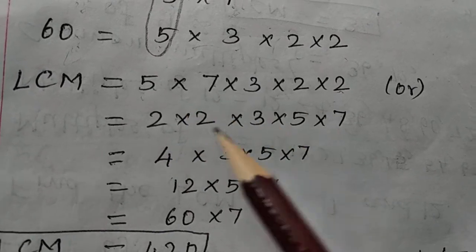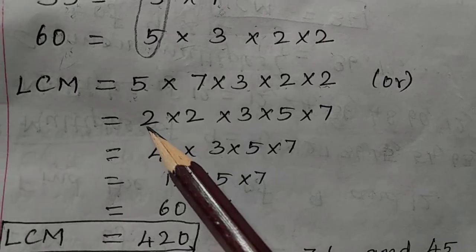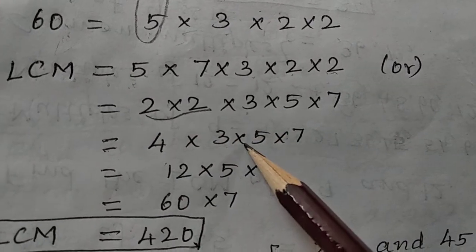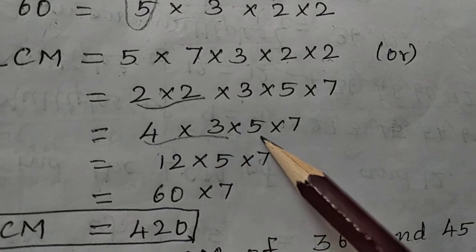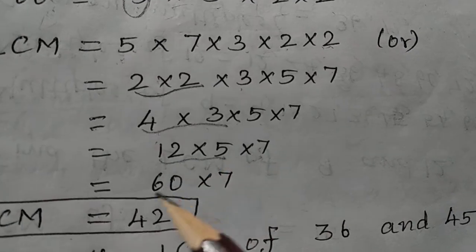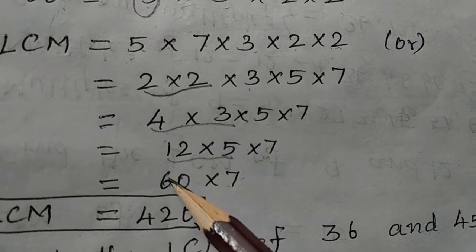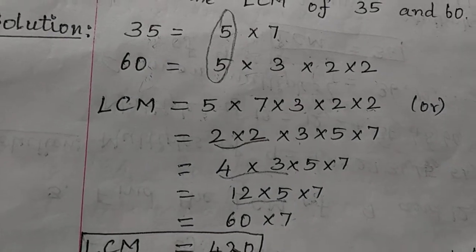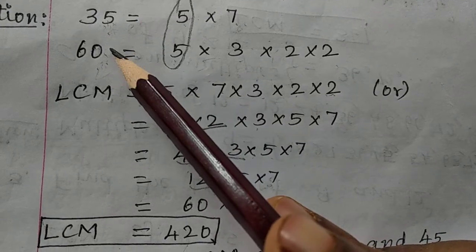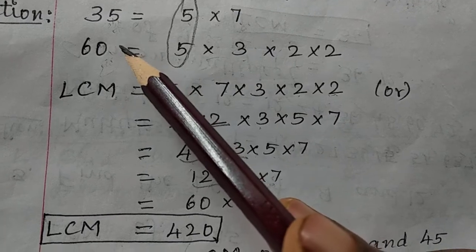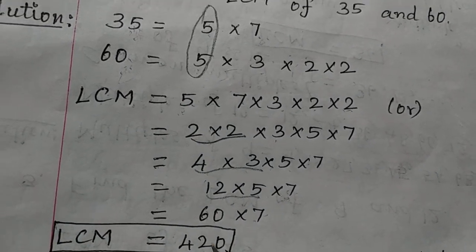Rewriting in ascending order: 2 × 2 × 3 × 5 × 7. Now, 2 × 2 = 4, then 4 × 3 = 12, then 12 × 5 = 60, then 60 × 7 = 420. So LCM of 35 and 60 is 420. Note: the least common multiple of any given numbers will be greater than those given numbers.